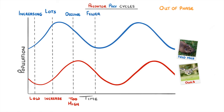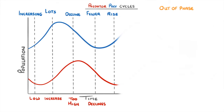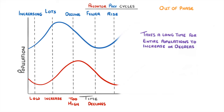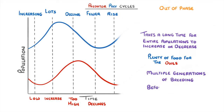Once the owl population gets too high though, it starts to cause a decline in the mouse population because the mice are suddenly all being eaten. Because there are now fewer mice and so less food for the owls, the owl population starts to decline as well, and this in turn will allow the mouse population to rise again — meaning we're back to where we started and the cycle repeats. The main reason we get this cycle rather than a steady equilibrium is that it takes a long time for entire populations to increase or decrease. Even if there is plenty of food for the owls, it still takes multiple generations of breeding before there are lots more owls around.